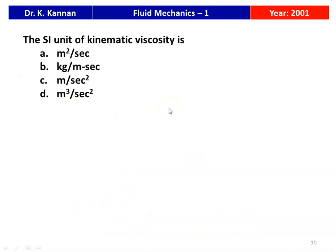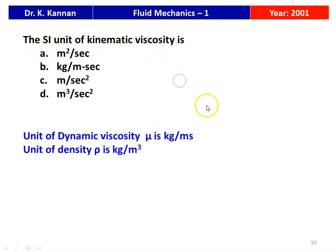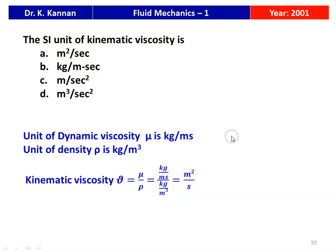Next question from the 2001 question paper: the SI unit of kinematic viscosity. The answer is very simple — meter squared per second (m²/s). This is the kinematic unit for kinematic viscosity that you must remember.